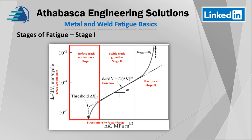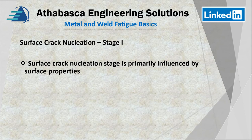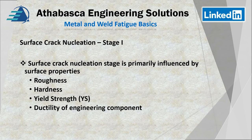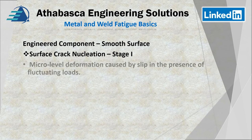So the next slide highlights stage one, which I've put in a box, and this is the one we're going to look at in more detail in the next couple of slides. Stage one: the surface crack nucleation stage is primarily influenced by surface properties. The surface properties can include the roughness, the hardness, yield strength, and the ductility of the engineered item. The nucleation stage requires a smooth surface.